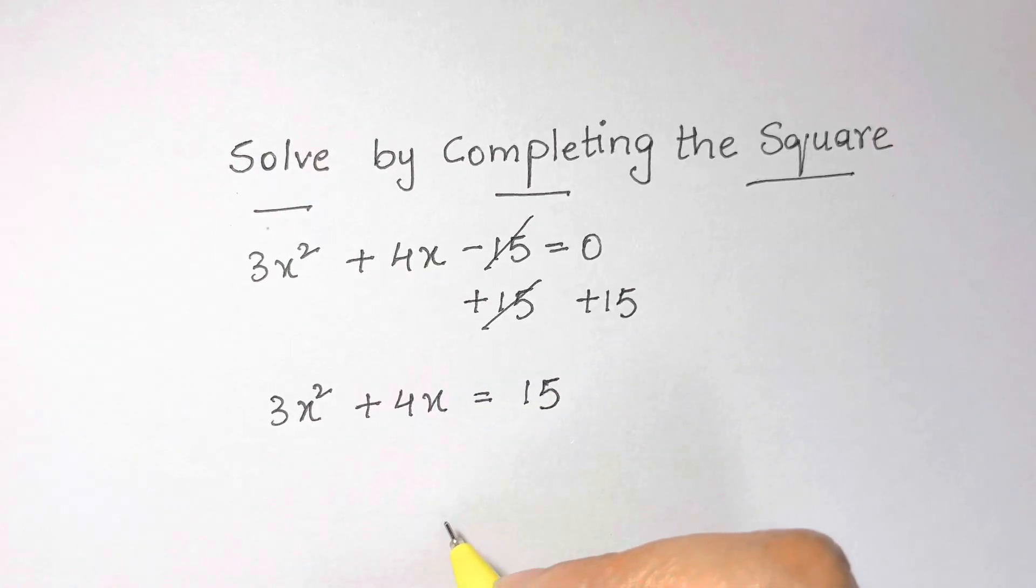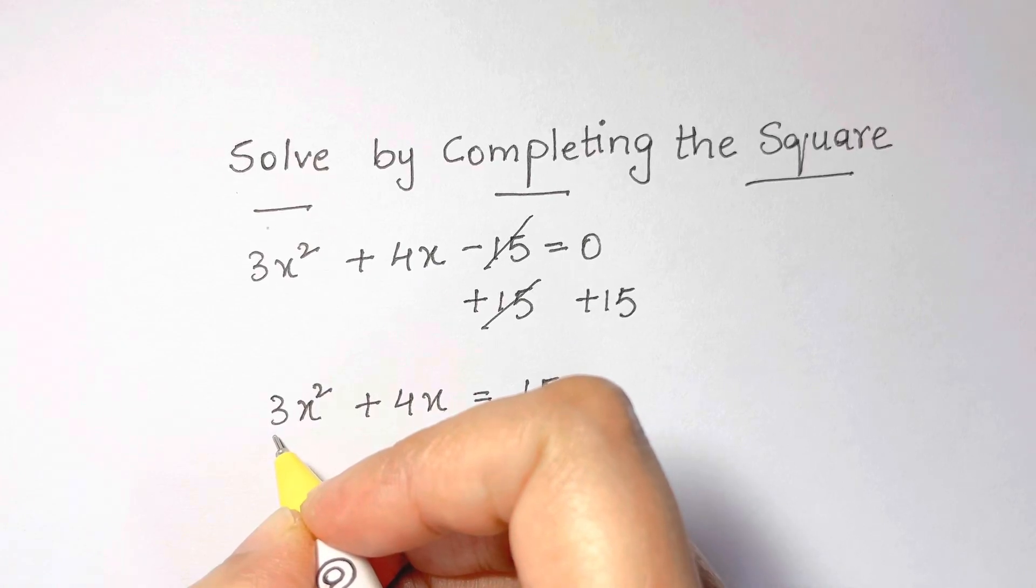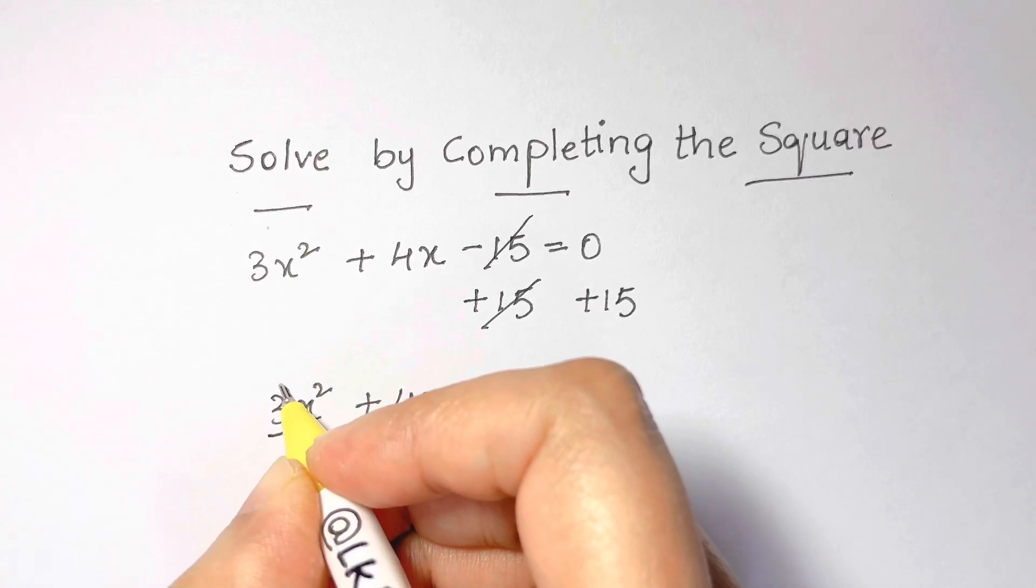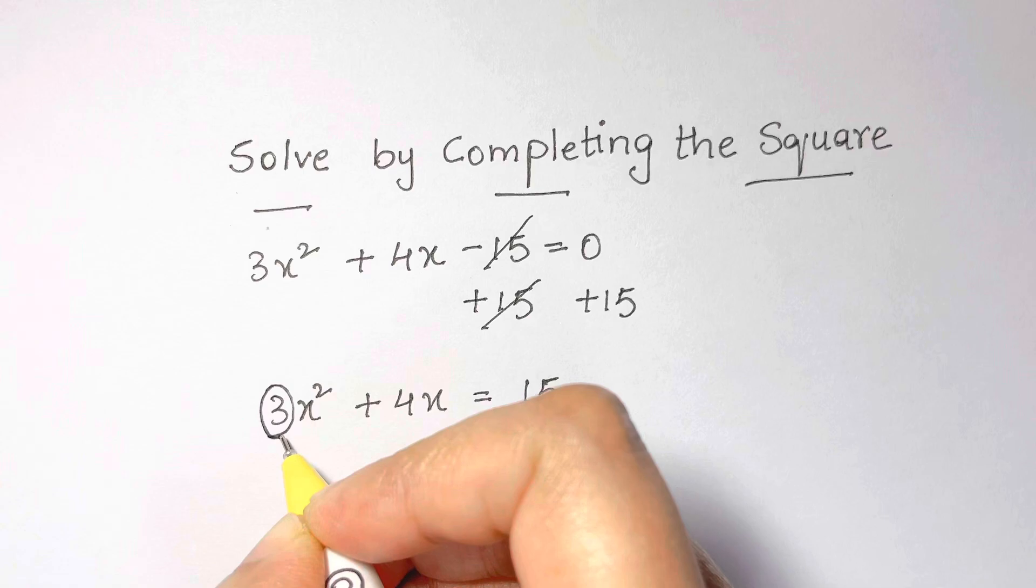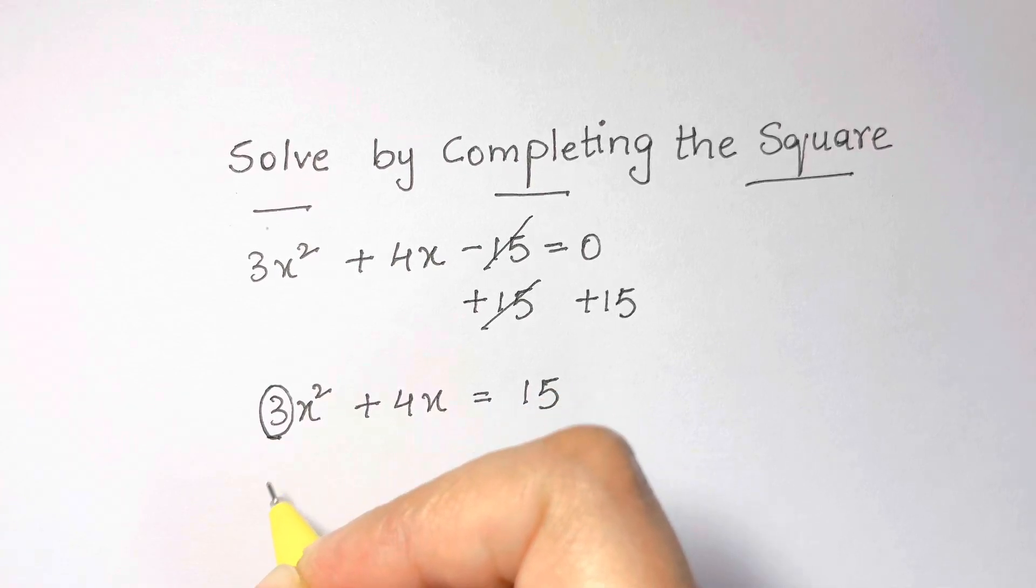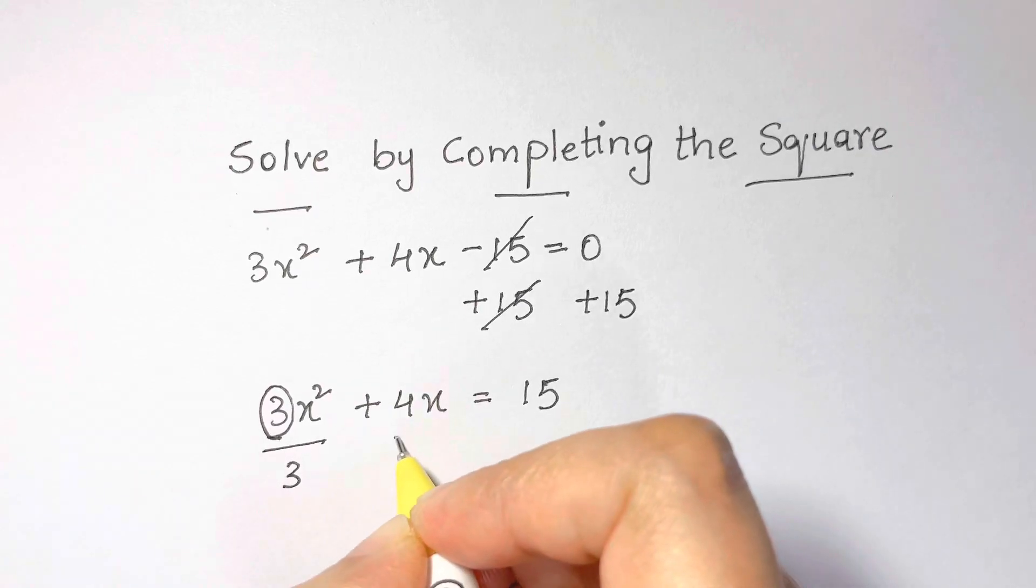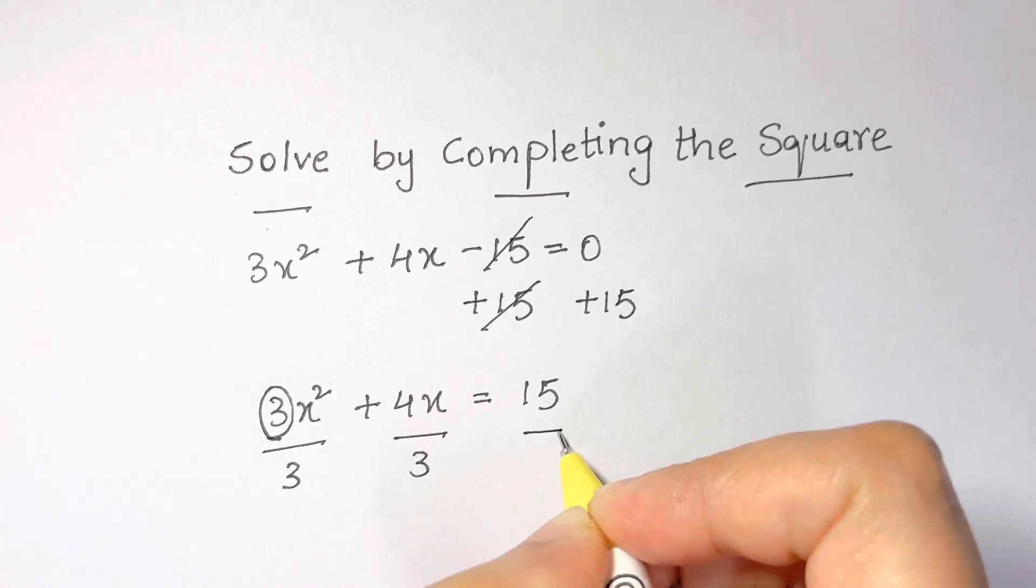The next step is to make sure that the leading coefficient must be 1, and for this one over here is 3. So we need to make sure that this should be 1, so we must divide this by 3. All the terms are divided by 3.